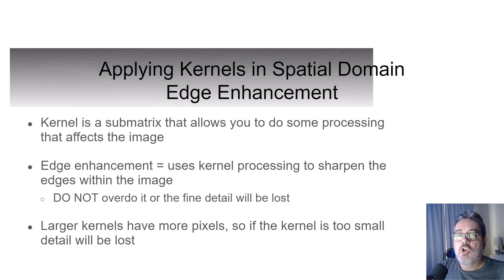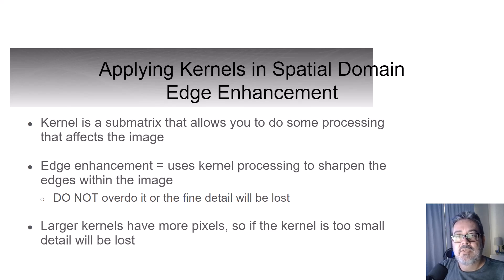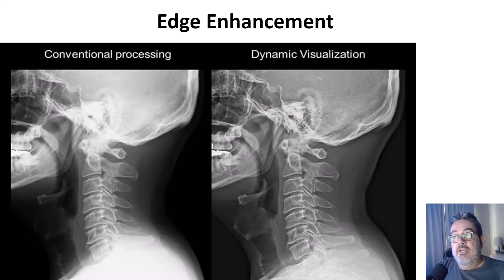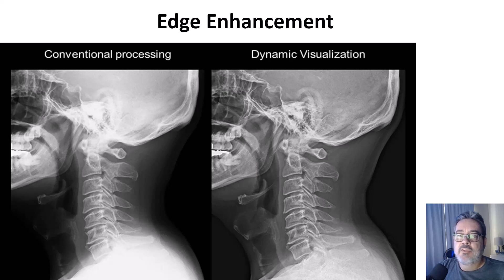Let's talk about kernels in spatial domain edge enhancement. A kernel is a submatrix that allows you to do processing on the image, specifically as it applies to edge enhancement and smoothing. Edge enhancement uses kernel processing to sharpen edges within the image, but it's easy to overdo and lose fine detail. Larger kernels have more pixels, so if the kernel is too small, you'll lose detail. The image on the right with edge enhancement allows you to see much more specific detail — it's sharper, but it also has some image noise or graininess.